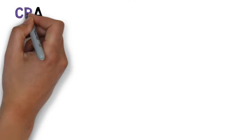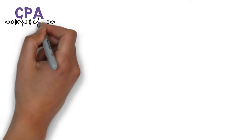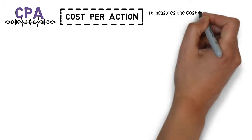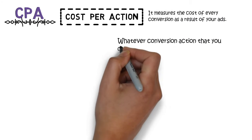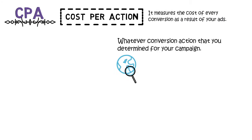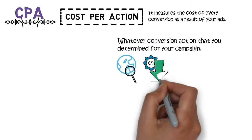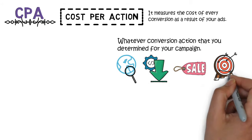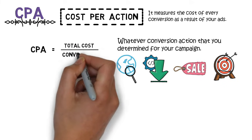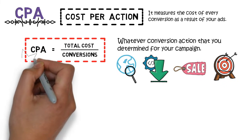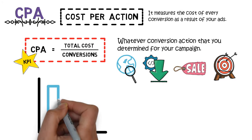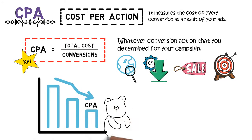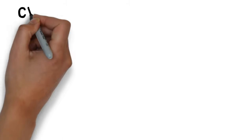Cost per actions, CPA. Sometimes it can also be referred to as cost per conversions, or whatever conversion actions that you have determined for your campaign. It can be a site visit, an app download, a sale, or any other desired conversion action. It's calculated as cost divided by conversion actions. This will usually be the main KPI of your direct response campaign, and we will generally want the CPA to be lower.